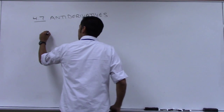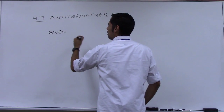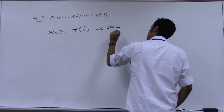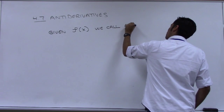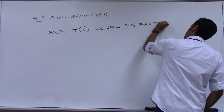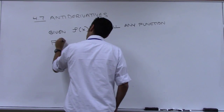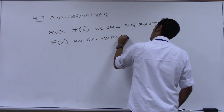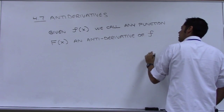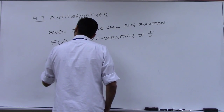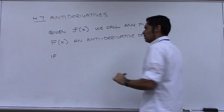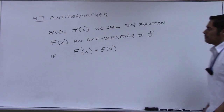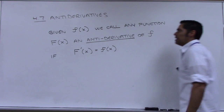Given f(x), we call any function capital F(x) an anti-derivative of little f, if the following is true: the derivative of capital F(x) is equal to little f(x). So this is what it means to be an anti-derivative.